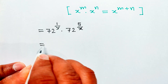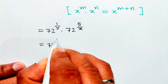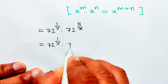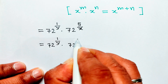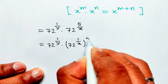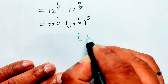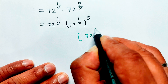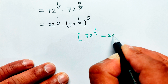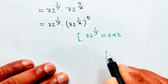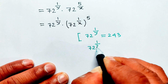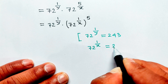This equals 72 to the power 1 divided by y, into 72 to the power 1 divided by x, whole to the power 5. And 72 to the power 1 divided by y equal 243, and 72 to the power 1 divided by x equal 24.